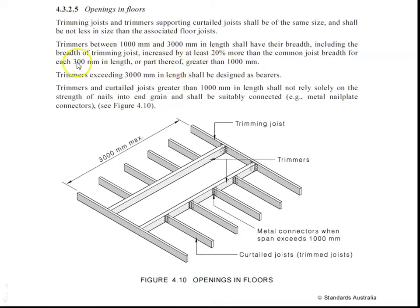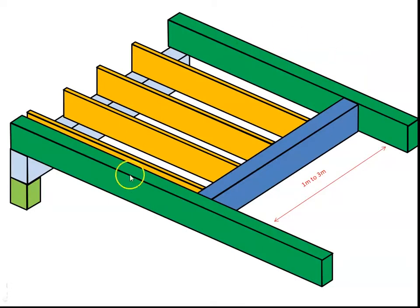So where it says the part greater than a metre, that means the first metre you get for free. One metre long, don't need to change anything. So let's have a look at this example here from a different view. So this is our trimmer coming across there, and on either side is our trimming joists coming down beside the opening.